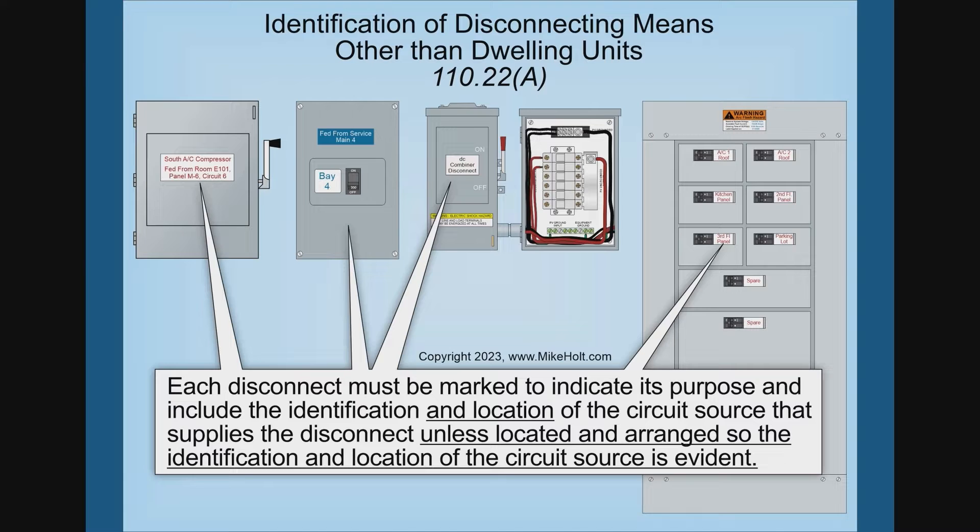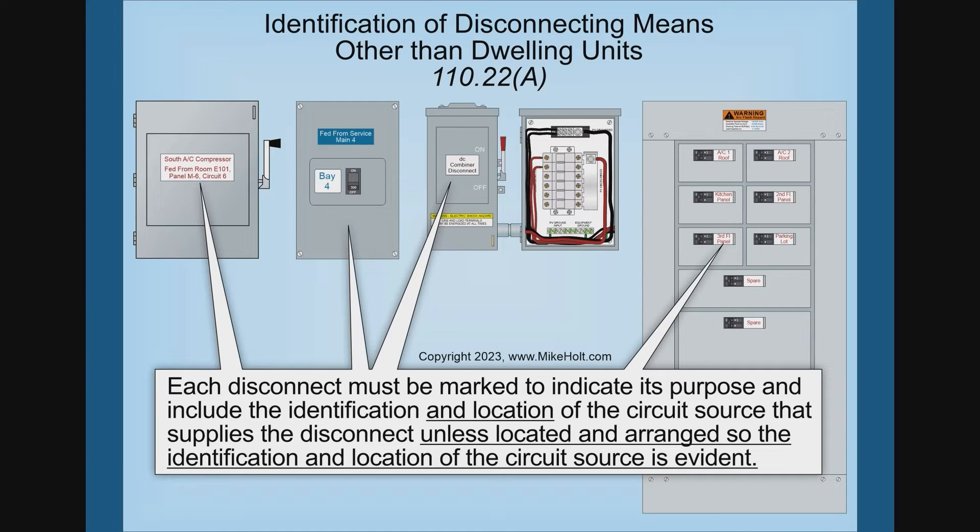this rule applies to other than dwelling units, so just stating that before we get started. Other than dwelling units. You know, the electrons don't know the difference — why would a homeowner of all places not be able to know where the source of power is to turn this off?